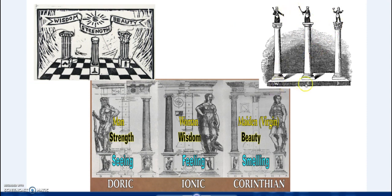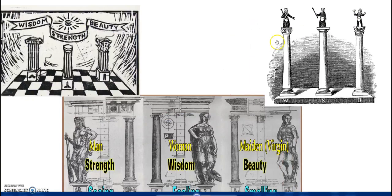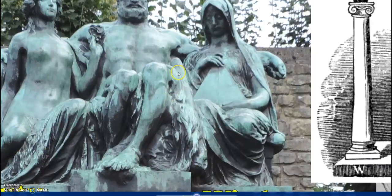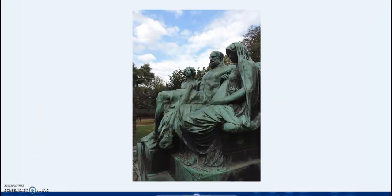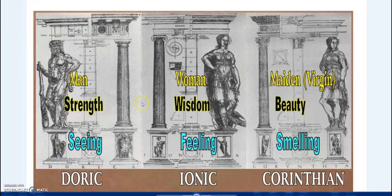Wisdom, strength, and beauty — WSB. We can see the Ionic for wisdom, the Doric for strength, and Corinthian for beauty. Why are there three male figures in the park? In Freemasonry, the lodge officers are connected to these three columns — that's why we have the males there: the wardens and so forth. The male carries the club, and back in the park you can see him holding the club — there's no mistaking that: strength, wisdom, and beauty.